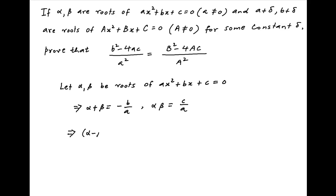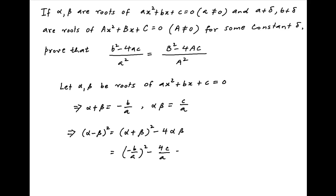Now note that (alpha minus beta)² is equal to (alpha plus beta)² minus 4·alpha·beta. Putting in the values of alpha plus beta and alpha·beta, this becomes (minus b upon a)² minus 4c upon a, which is equal to (b² minus 4ac) upon a².